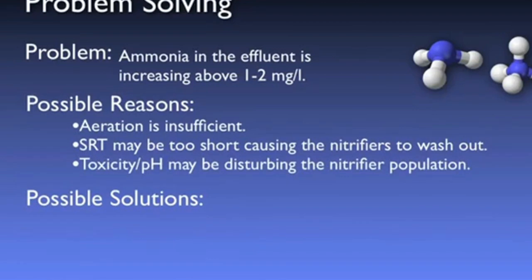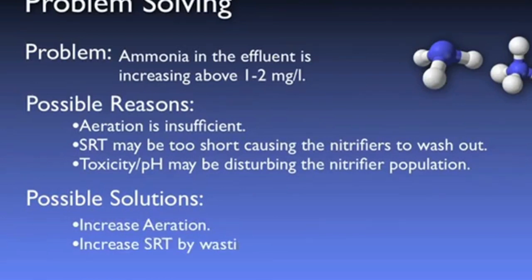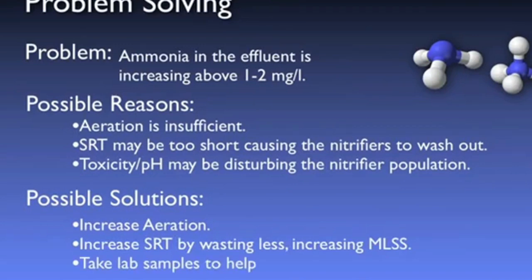Knowing these things, the possible solutions are easily determined. If low DO is the culprit, full nitrification will return by increasing aeration. If temperatures have dropped, the SRT may need to be increased to maintain a healthy nitrifying population. If pH or toxicity is the culprit, certain specific actions may be required depending on the exact cause.